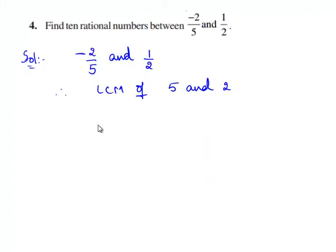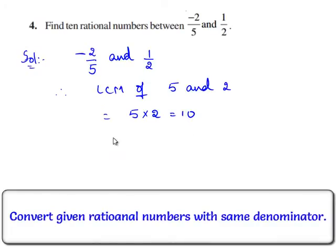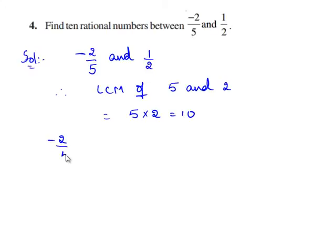As we know, the LCM of two prime numbers is their product itself. Therefore, the LCM of 5 and 2 is 5 times 2, which is equal to 10. Now, express each of these rational numbers with their denominator as the LCM. Therefore, minus 2 by 5 is equal to, with 10 as denominator, 5 times 2 is 10. Therefore, minus 2 times 2 is equal to minus 4 by 10.